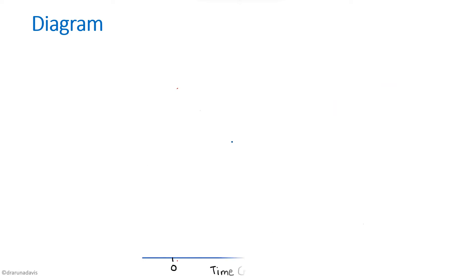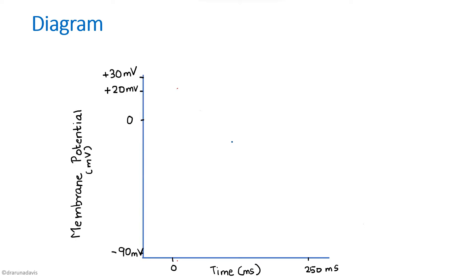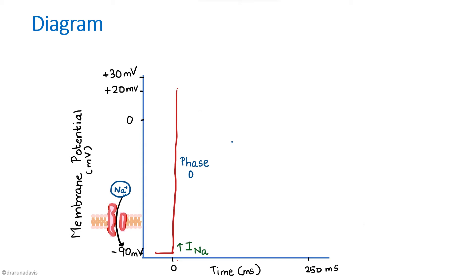When drawing the diagram, plot time on the x-axis and membrane potential on the y-axis. It is not just enough to draw the phases — you also have to indicate the ionic bases, showing which currents are increased or decreased. In phase 0, rapid depolarization, the chief current involved is sodium. There is rapid depolarization due to opening of sodium channels, so you write increased I-Na.